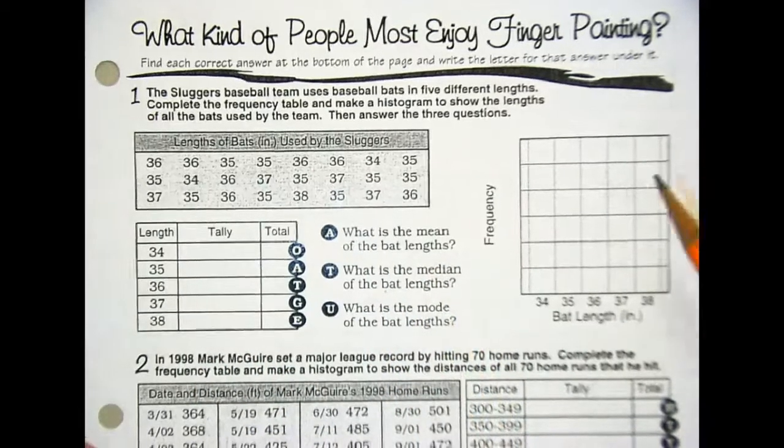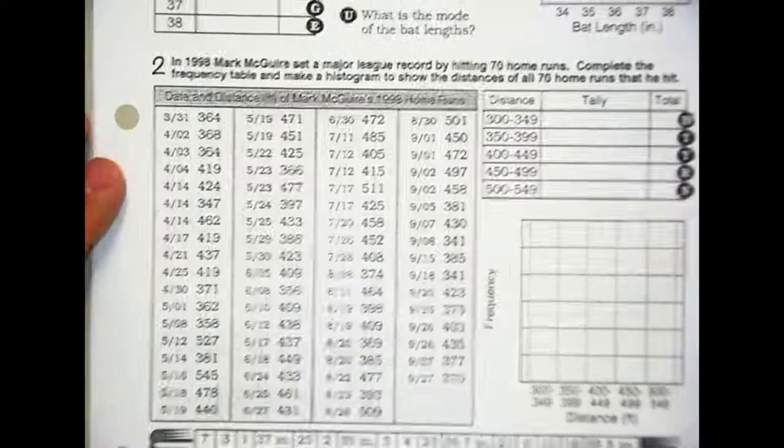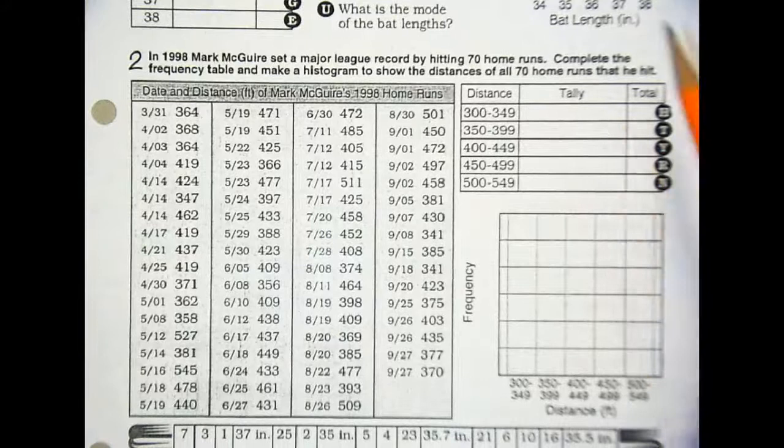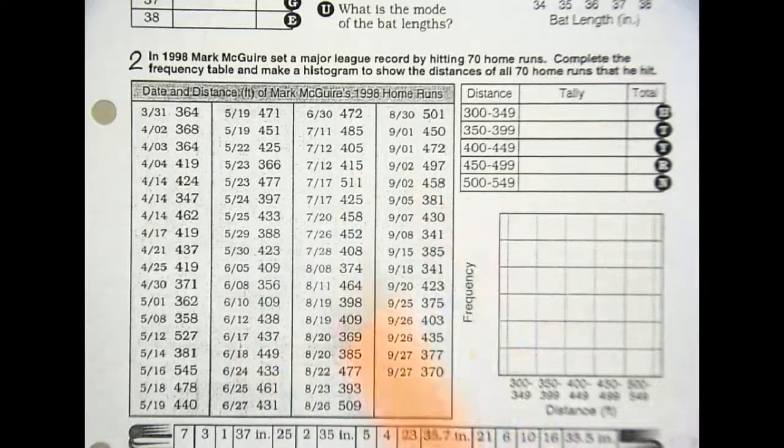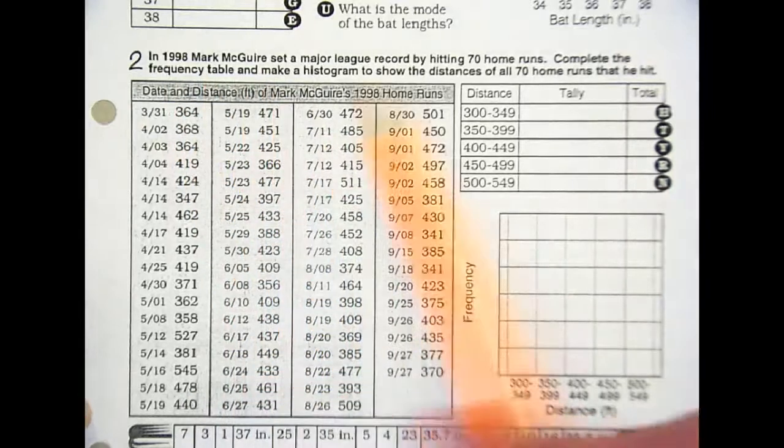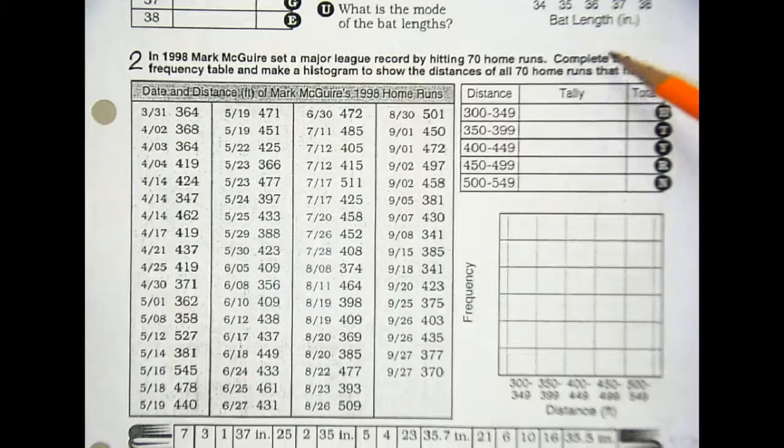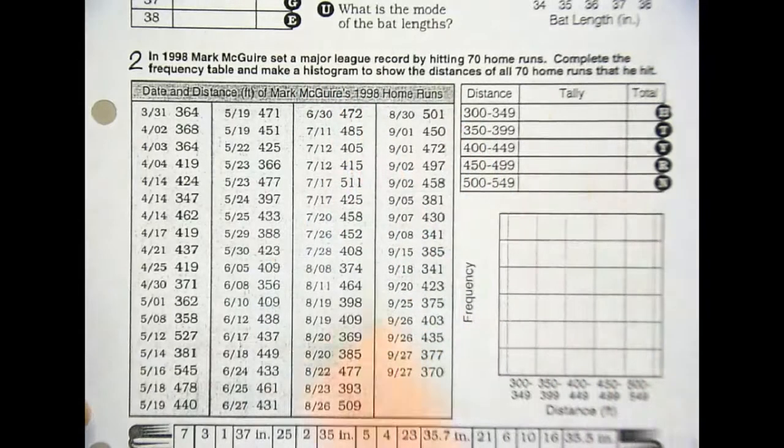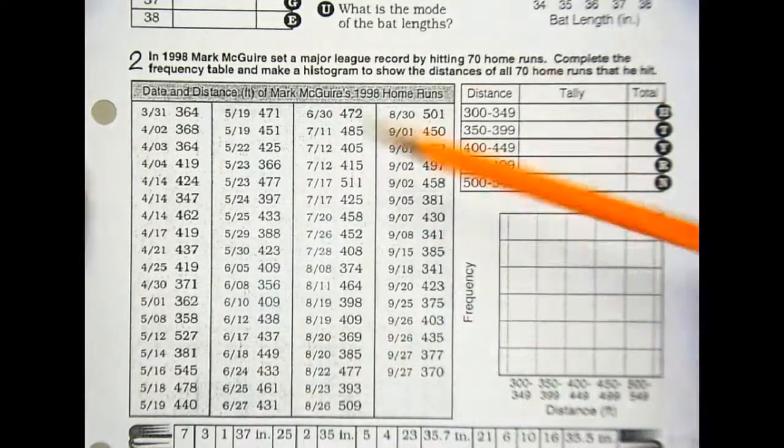Where I think students struggle is down on the next part here. It's not because they don't understand how to make the frequency table or the tally, but some of you have no idea how to read baseball stats. So let's read through this real quick. In 1998, Mark McGwire set the major league record by hitting 70 home runs. Complete the frequency table and make a histogram to show the distance of all 70 home runs he hit.